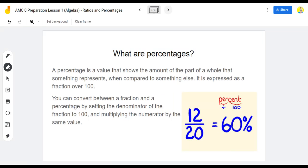What are percentages? A percentage is the value that shows the amount of the part of a whole that something represents when compared to something else. It is expressed as a fraction over 100. You convert between a fraction and a percentage by setting the denominator of a fraction to 100 and multiplying the numerator by the same value.